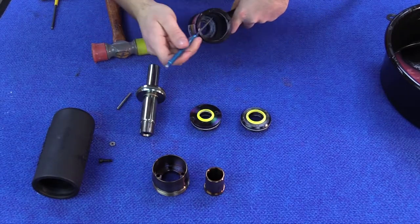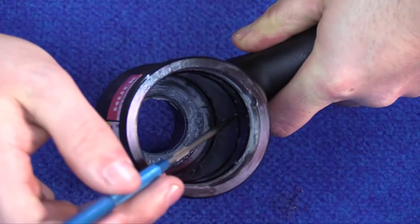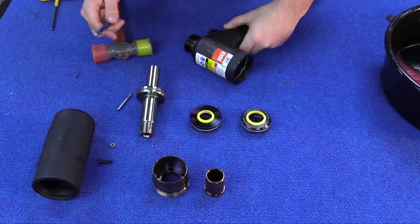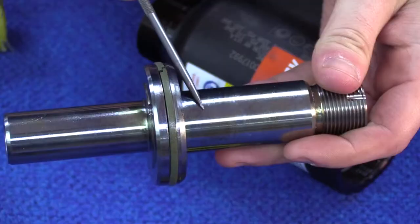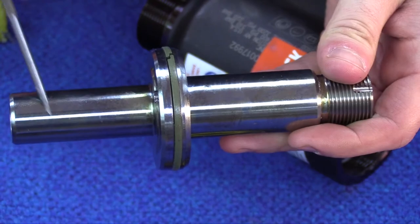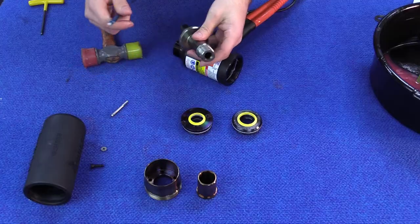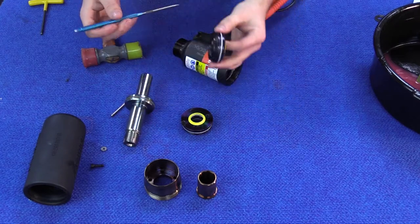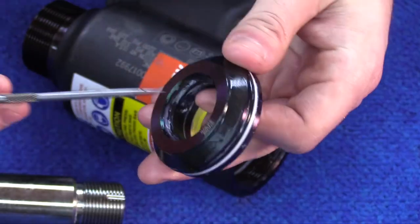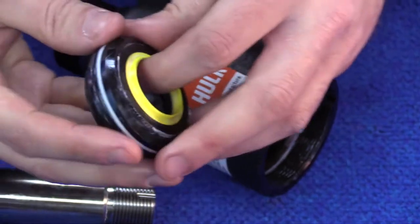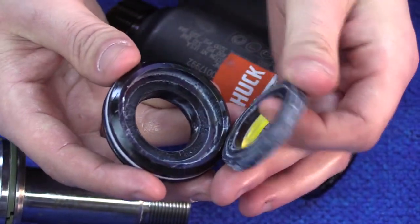You want to inspect the cylinder for any scoring. Check the piston rod on the front and back for any scoring, any dings, and along the flange. Check the threads. Inspect the front gland for any scoring on the outside and inside, and be sure to replace all seals.